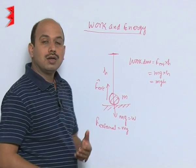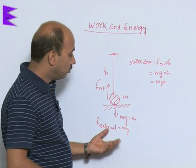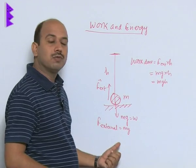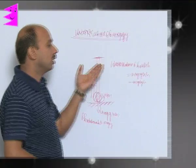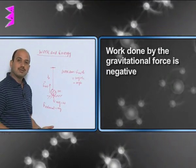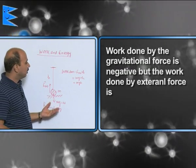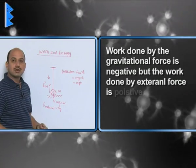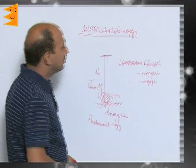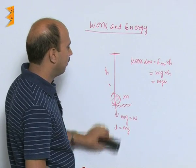But if you take work done by gravity, gravitational force that will be negative, because gravitational force is acting downside and body is going up. So work done by gravitational force is negative, whereas work done by external force is positive. So these are the examples where the work done is positive and negative.